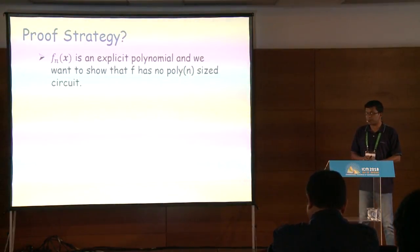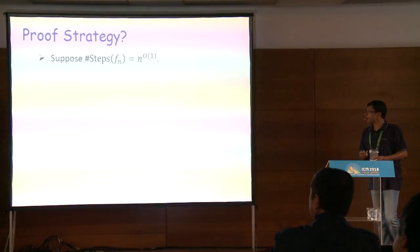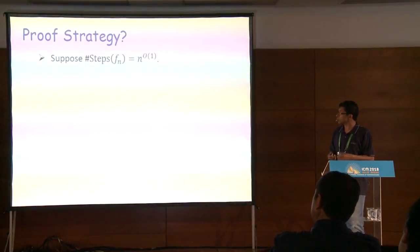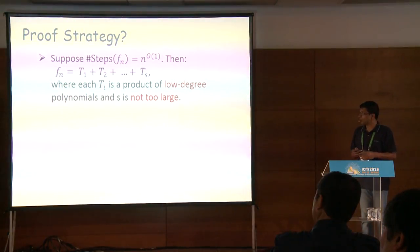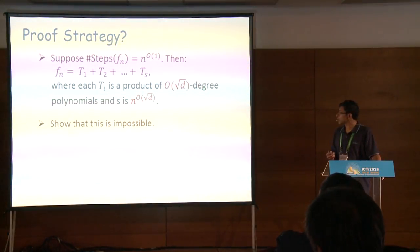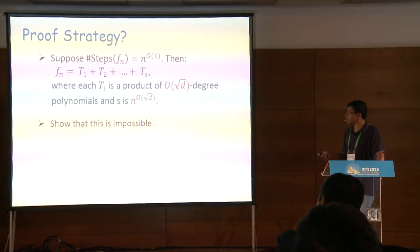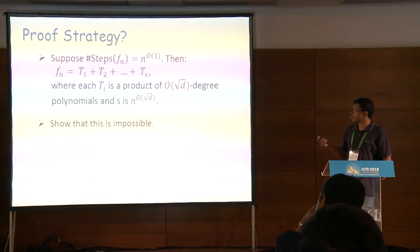Here is the strategy: I have a polynomial in n variables that I want to prove is hard to compute. I proceed by contraposition — suppose it's easy to compute. I apply the depth reduction and write F as a sum of a few polynomials, each of which is a product of low-degree polynomials. If I choose depth 4, the low degrees I get will be √d, and the number of terms will be n^√d. What we hope to prove is that this is impossible for the polynomials I think are hard.